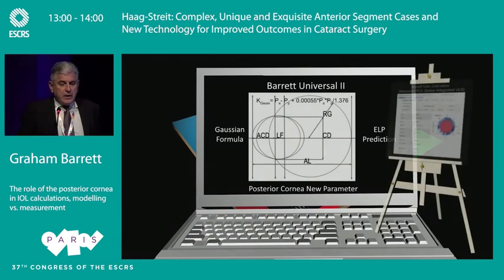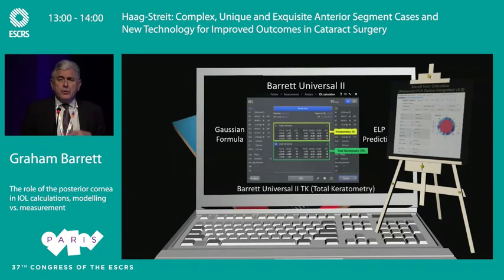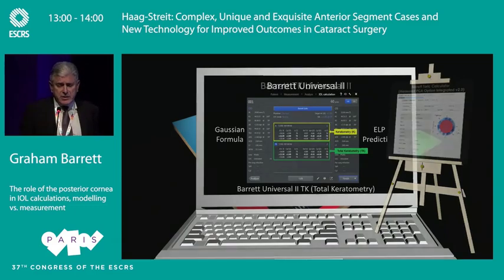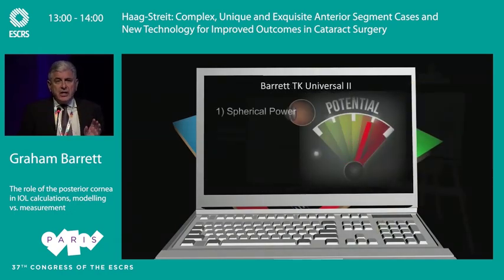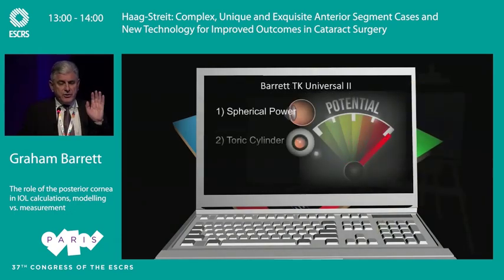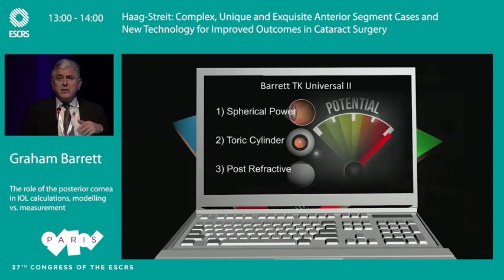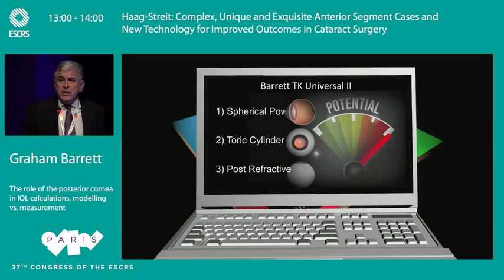The version of the Barrett Universal which does allow you to use a posterior cornea, as implemented in the Zeiss Almos 700, is called the Barrett Universal TK. It's also available online at APSCRS.org. The potential for measuring the posterior cornea is threefold: potentially for spherical power, for toric cylinder prediction, and for post-refractive cases. Let's look at each in turn.